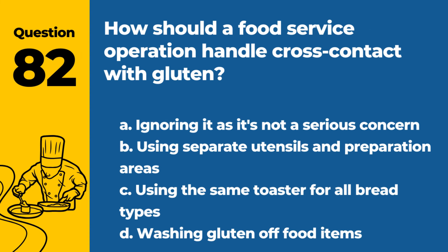Question 82. How should a food service operation handle cross-contact with gluten? a. Ignoring it as it's not a serious concern. b. Using separate utensils and preparation areas. c. Using the same toaster for all bread types. d. Washing gluten off food items. Answer: b. Using separate utensils and preparation areas. This prevents cross-contact with gluten, important for guests with gluten intolerance or celiac disease.